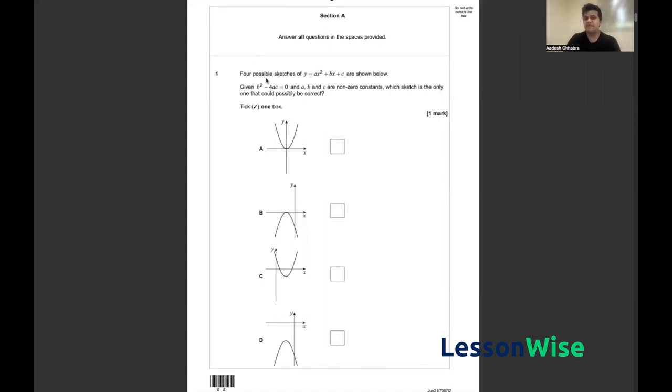In question one of this paper, we've been given four possible sketches of y equals ax squared plus bx plus c, which is the standard quadratic equation format. It has been said that the determinant of this quadratic equation, b squared minus 4ac, is equal to zero, where a, b, and c are all non-zero.